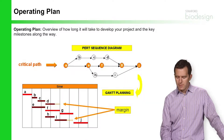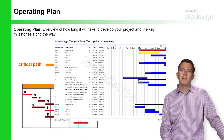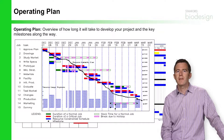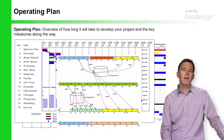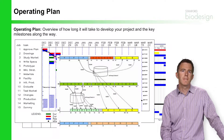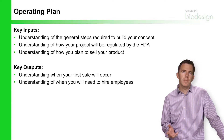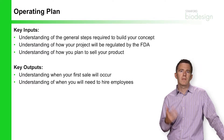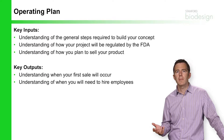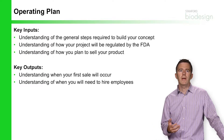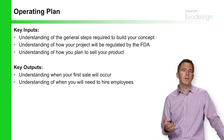The first thing we need to do is construct an operating plan. There are many different types of operating plans — you can use programs like Microsoft Project or Excel to create very complicated diagrams. But at the end of the day, the importance of the operating plan is that it gives you a sense of what tasks you need to accomplish to generate value for your company.